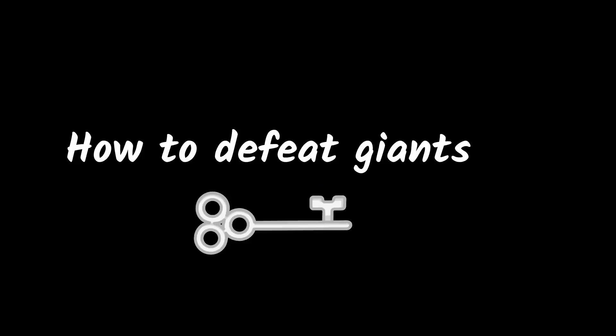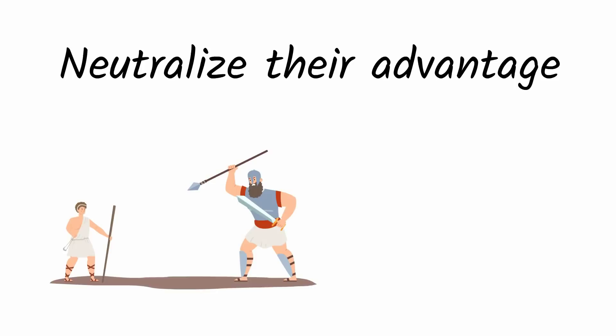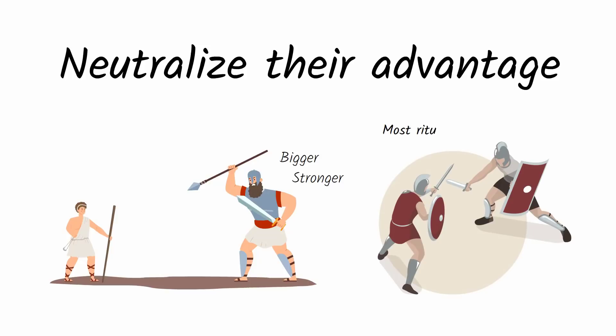The key to pulling off surprising victories against powerful foes is to strategically neutralize their advantage. Goliath was big, strong, and powerful, but that didn't matter because David was not going to engage Goliath in sword-to-sword combat, like most ritualistic single combat battles had been settled. David planned to fight Goliath from a distance and turned the battle into a contest between Goliath's spear-throwing abilities and his slingshooting skills.